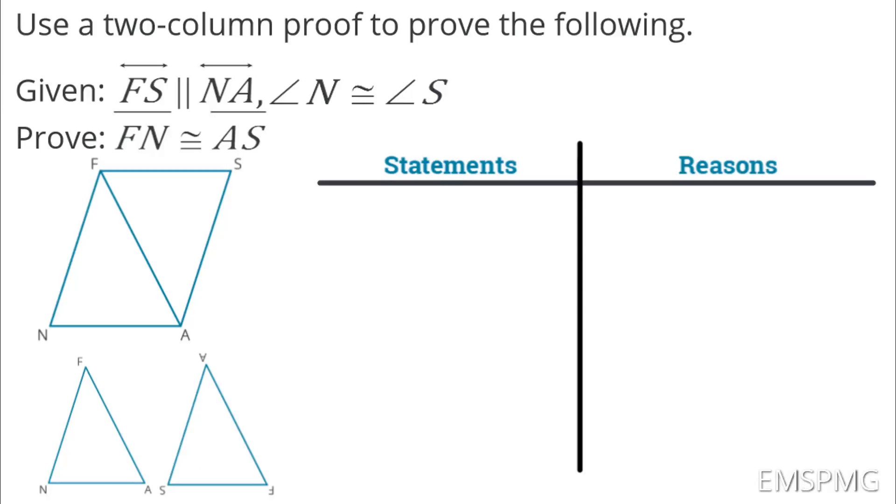Now, in our proof, we know we're always going to start with our given information. We are always going to end with our proof statement. Again, as I said, to prove parts congruent, you have to prove the triangles congruent first. So, our first statement, I'm just going to go ahead and put in that first given piece of information. We know that that was given to us.